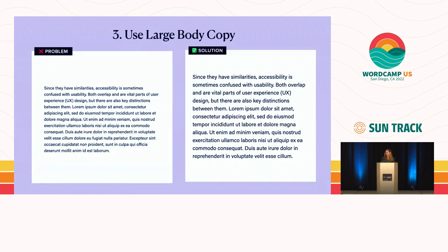Number three: use large body copy. Small body text is hard to read. You want to make sure your body copy is 18 pixels or higher. Small body copy is basically a remnant of the constraints of print in newspapers and magazines, but we don't have those constraints on the web — people are used to scrolling. Also, don't make your smallest text like metadata and categories below 14 to 16 pixels. You want people to be able to read your content with ease, even if they have some limitations.